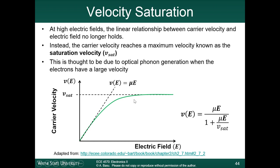Saturation velocity has some models, but it is not as well understood as some of the other phenomena we have talked about. It is thought to be due to optical phonon generation. A phonon is a single vibration within the lattice — just like an electron is a single unit of charge, a phonon is a single unit of vibration within the lattice. This chart is adapted from a very nice online book from the University of Colorado. If you are confused about any of the concepts in this module or any in this class, it is a really great reference — I highly recommend it.